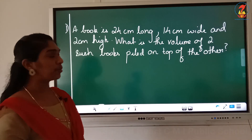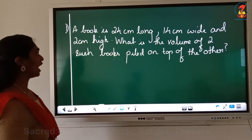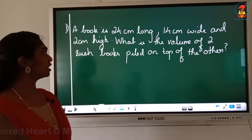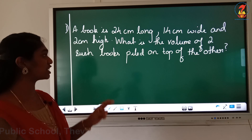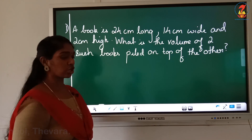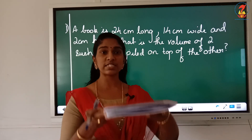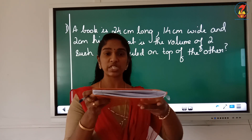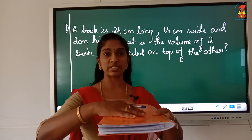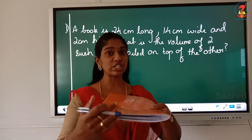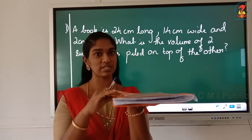First question: a book is 24 centimeter long, 14 centimeter wide, and 2 centimeter high. So the length is given, the breadth is given, and the height is given. What is the volume of two such books piled on top of the other? You take one book — we know one book itself is a solid shape — yes, it is a cuboid.